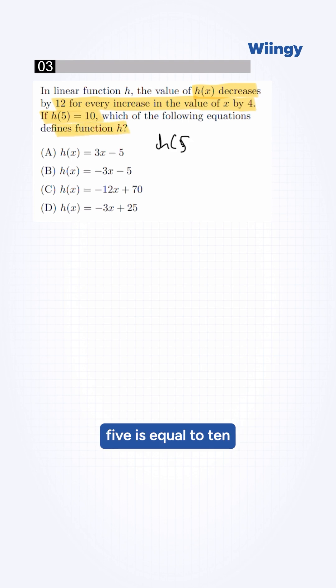Here we can put h(5) = 10 into our options. For the first option, h(5) = 3(5) - 5. This will be 15 - 5, which is 10, which matches our equation. So option A will be correct.